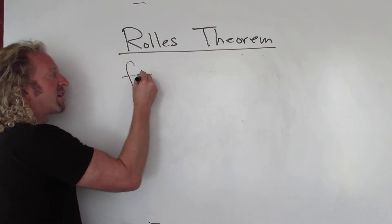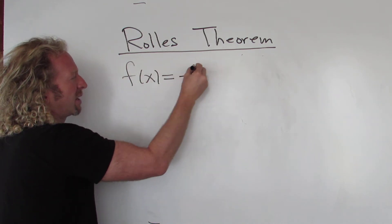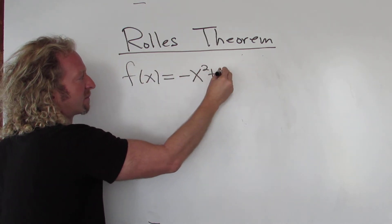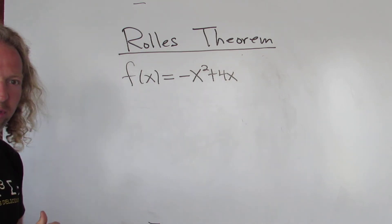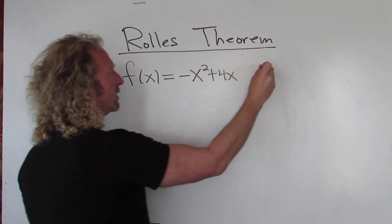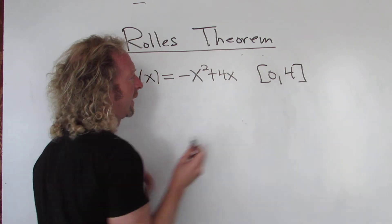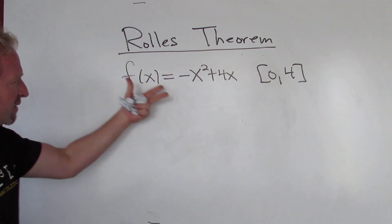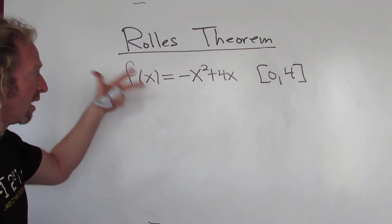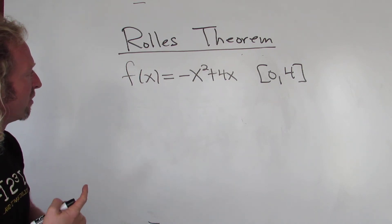The function f(x) equals negative x squared plus 4x. I think that'll work. And let's look at the interval [0, 4]. Yeah, it should work. So let's find the value of c under which Rolle's Theorem holds.